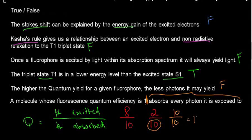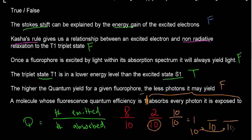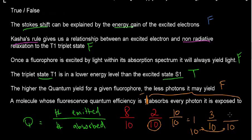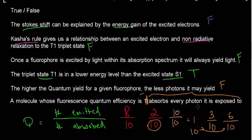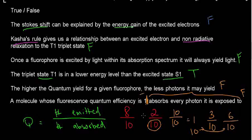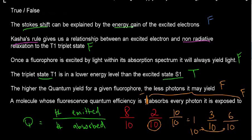A molecule could absorb 10 photons out of 10 and another also absorb 10 out of 10 — both satisfying 'absorbs every photon it is exposed to' — but one might emit only 3 and the other only 6. In neither case would the quantum yield be 1. This statement is incomplete and misleading — it only relates to the denominator, not the numerator. So this would be false.